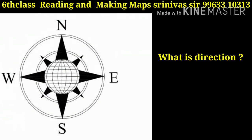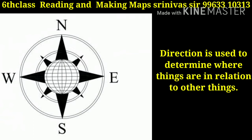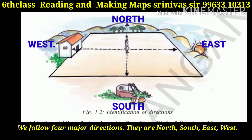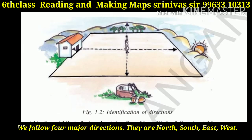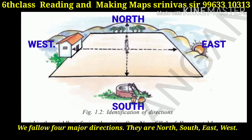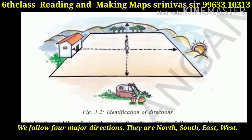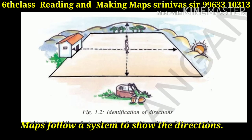What is direction? Direction is used to determine where things are in relation to other things. We follow four major directions: North, South, East, and West. Maps follow a system to show the directions.